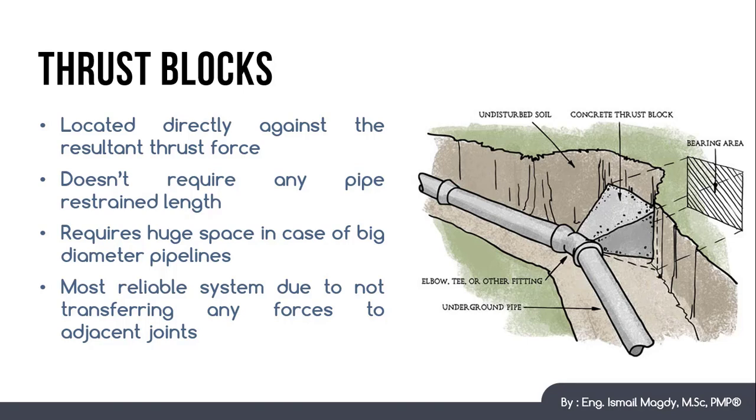Thrust blocks could be the most reliable system to resist thrust force because the concrete block is located directly behind the fitting in the opposite direction of the thrust force and it doesn't need providing any restrained joints.